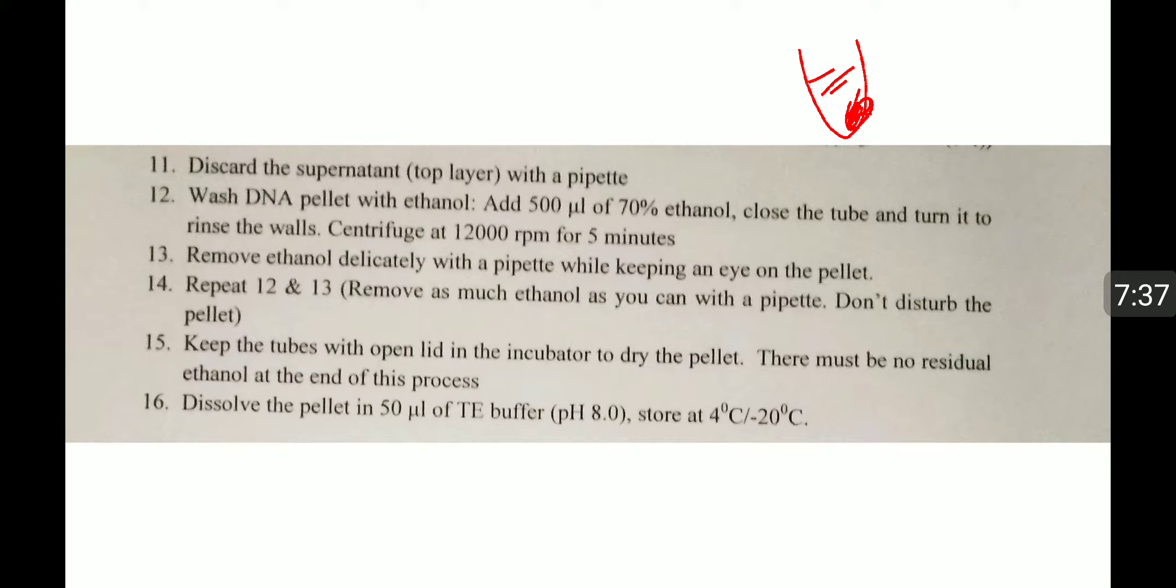Close the tube, turn it to rinse the walls, and centrifuge at 12,000 RPM for 5 minutes. Remove ethanol delicately with a pipette while keeping an eye on the pellet. Repeat steps 12 and 13.